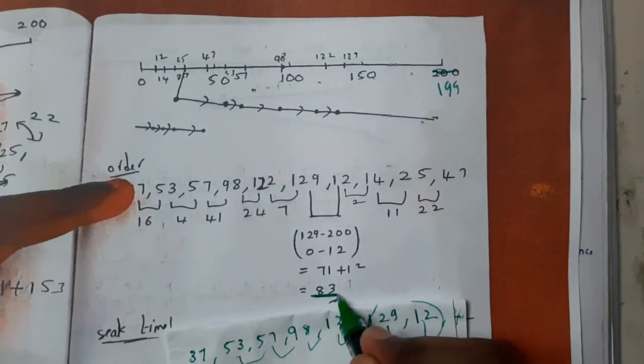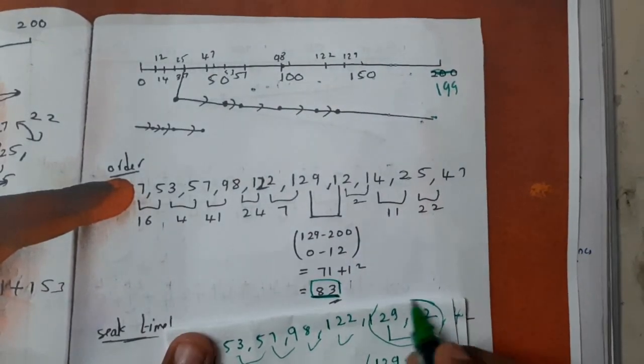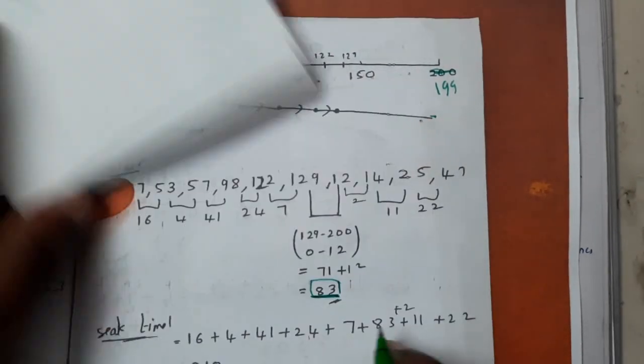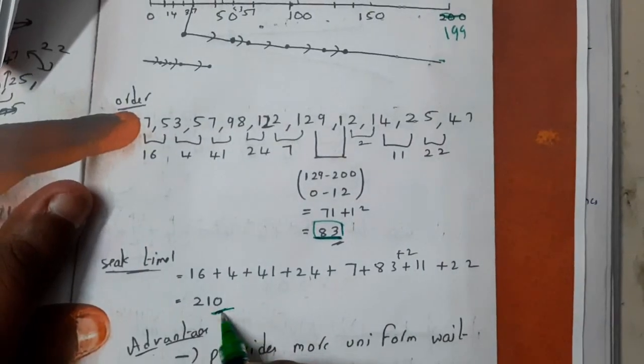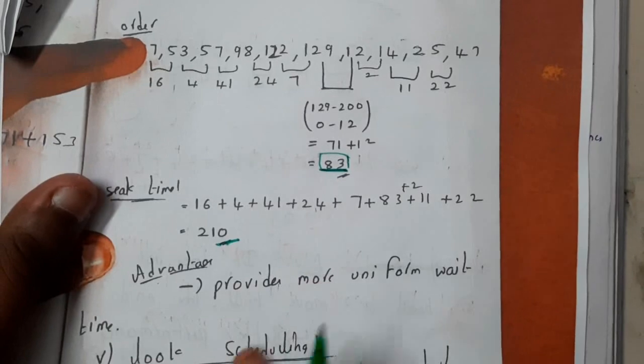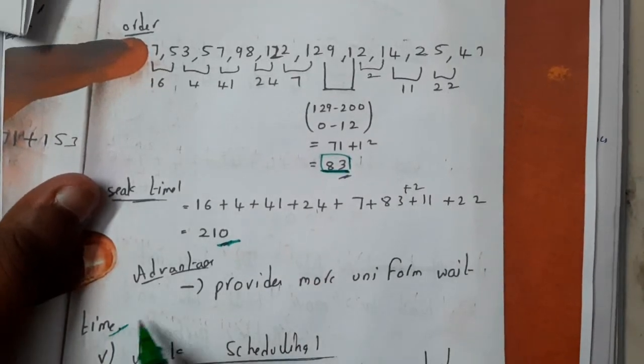For all the rest, you will be calculating in the normal way. So we got 210. It provides a uniform waiting time. When we compare with the normal scan, this circular scan is far better.